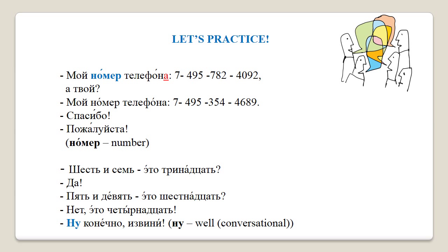Now let's have a look at how we can use numbers in a simple conversation. I'm going to read the dialogue first and then translate it. мой номер телефона: семь, четыре, девять, пять, семь, восемь, два, четыре, ноль, девять. А ваш? три, пять, четыре, четыре, шесть, восемь, девять. спасибо. пожалуйста. My phone number is 7-4-9-5-7-8-2-4-0-9. And yours? My phone number is 7-4-9-5-3-5-4-4-6-8-9. Thank you. You're welcome.